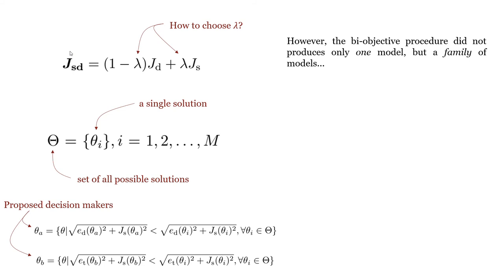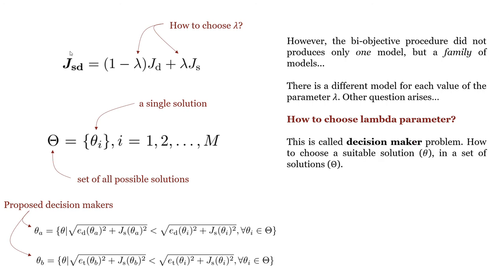However, the bi-objective procedure did not produce only one model, but a family of models. There is a different model for each value of the parameter lambda. This is called the decision-maker problem: how to choose a suitable solution in a set of solutions.